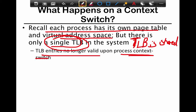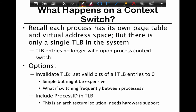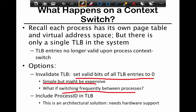When a context switch happens, an entirely new process starts to run. It has its own translations and its own page tables, so the TLB entries are no longer valid. One option is to invalidate the TLB - set the valid bits of all TLB entries to zero. This is simple but expensive in terms of performance. For example, if you frequently switch between processes, the TLB is going to be flushed and you'll keep having to reload from the page table on every access.